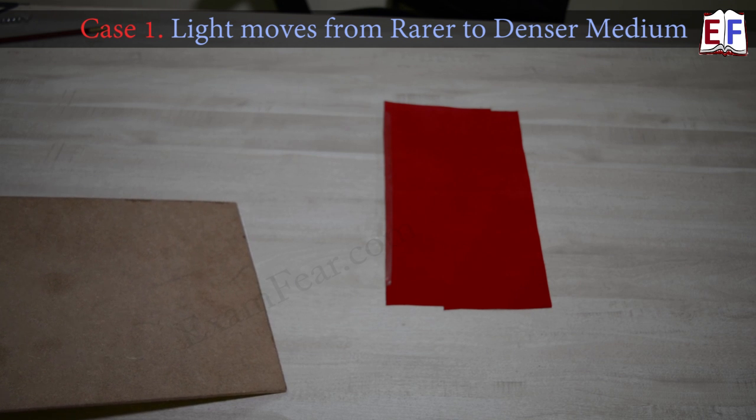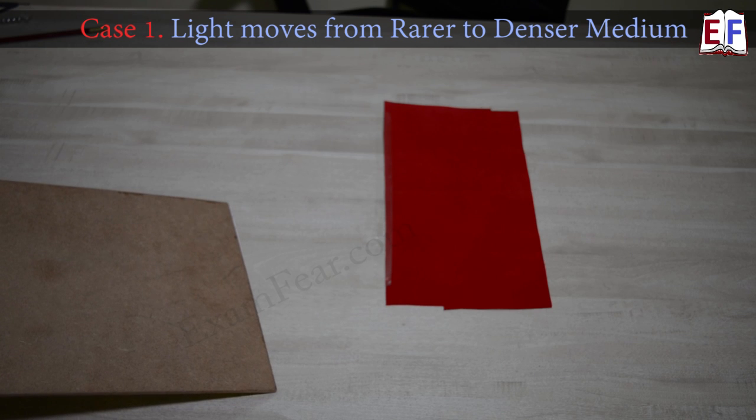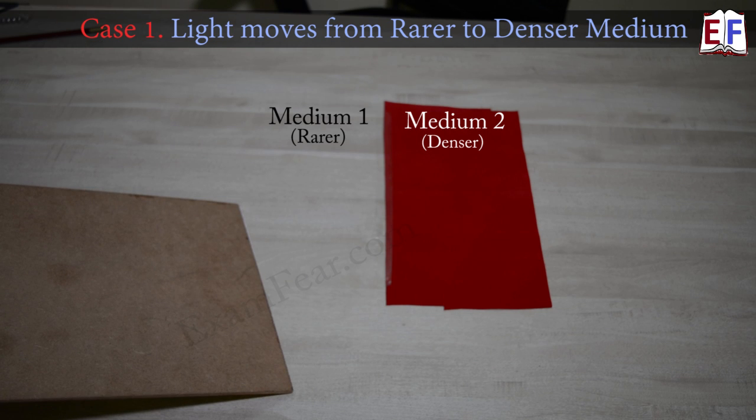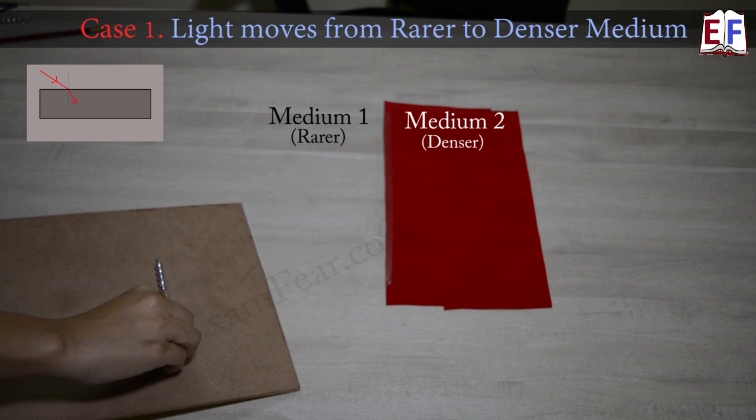In line with the same concept, let's see how the bending happens when light moves from optically rarer to denser medium. So here denser medium is the cloth and rarer medium is the smooth table.